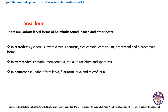The next morphological form is the larval form. There are various larval forms of helminths found in humans and other hosts. In cestodes, the following larval forms are present: cysticercus, hydatid cyst, coenurus, cysticercoid, coracidium, procercoid, and plerocercoid forms.